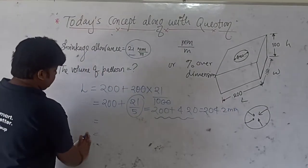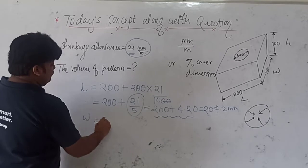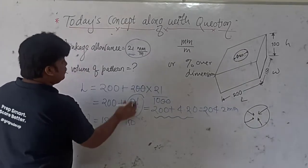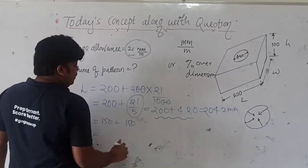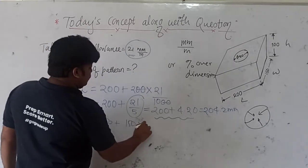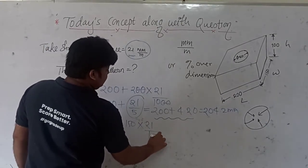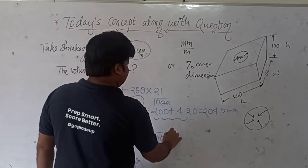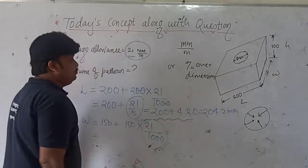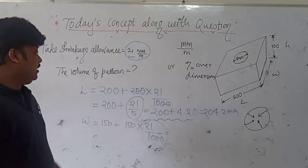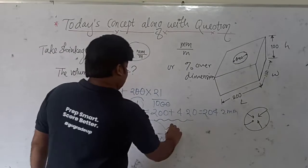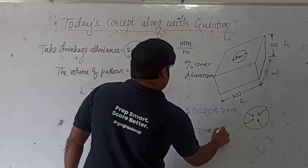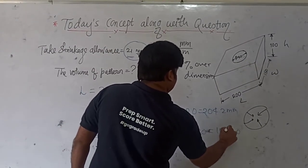For the width: 150 mm plus the shrinkage allowance. The shrinkage allowance is 21 mm per meter, so it is 150 into 21 divided by 1000, which gives approximately 3.15 — so the pattern width is approximately 153.20 mm.